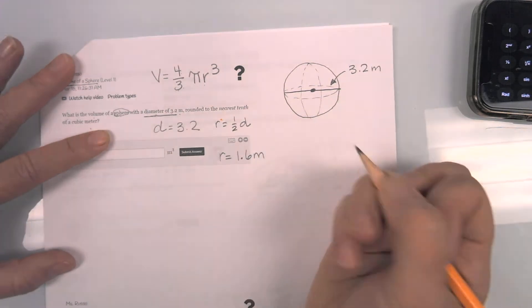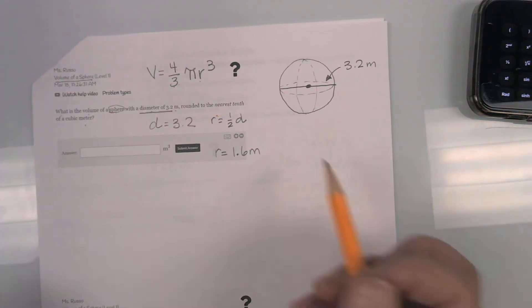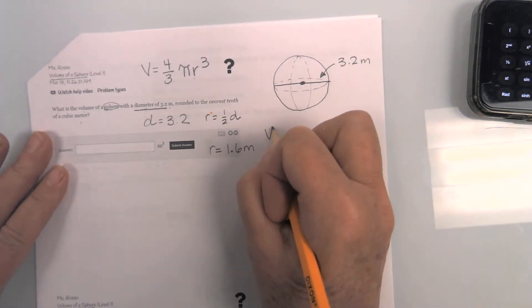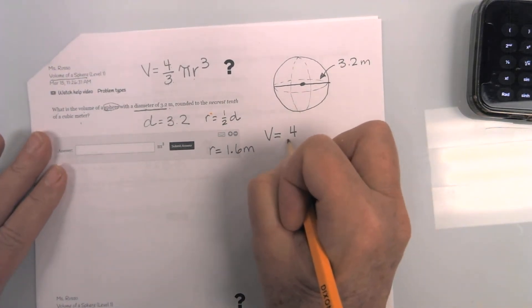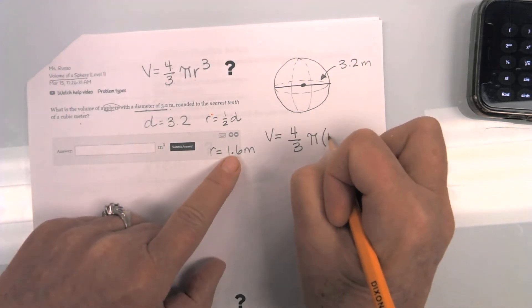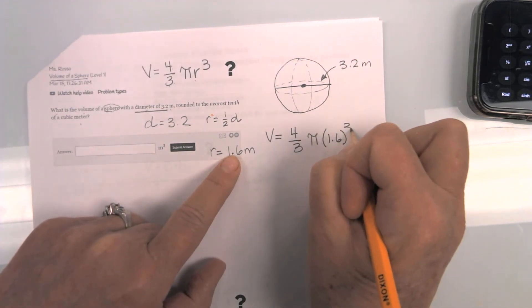What are we using? Meters. That is the only number I need to know to plug this in. So let us go. Volume equals four-thirds pi radius 1.6 cubed.